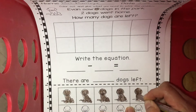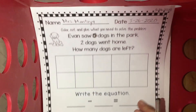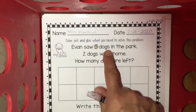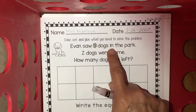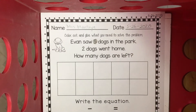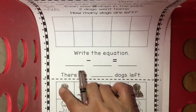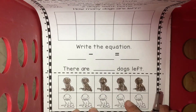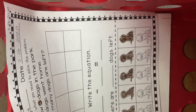Let me go back to my story so I don't forget. It says Evan saw five dogs in the park. So now these are the only five doggies I need — I don't need these doggies at the bottom. So what I'm gonna do is go ahead and cut. I'm gonna cut on the dotted line.